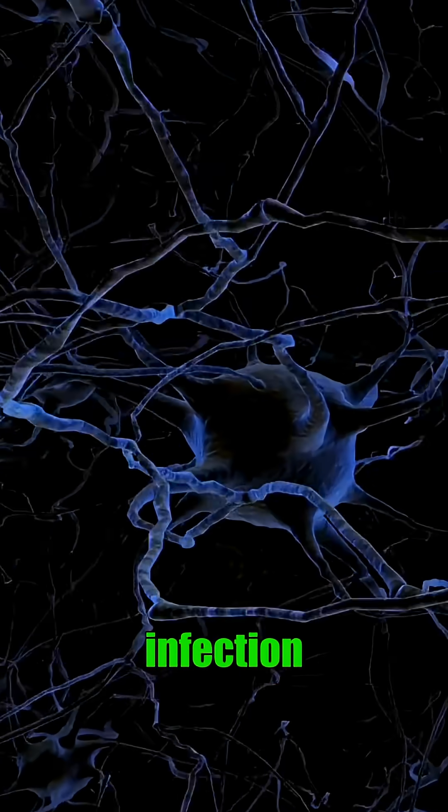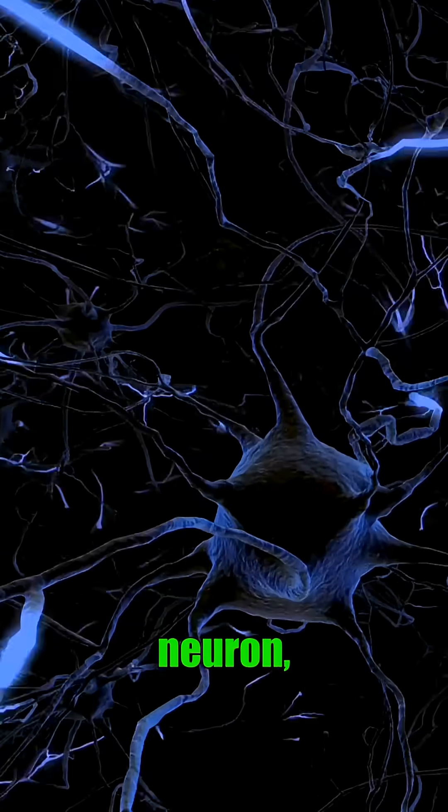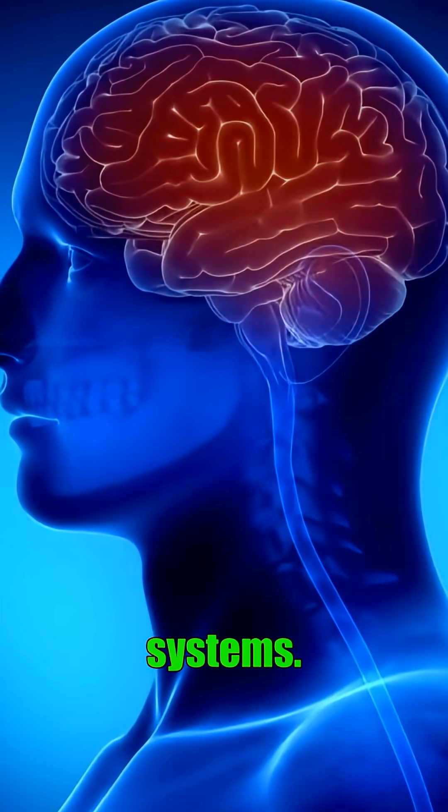Its deadliness lies in its stealth. The virus actively blocks neurons from making interferons, rendering the infection invisible to the immune system. It then stealthily jumps from neuron to neuron, avoiding the body's alarm systems.